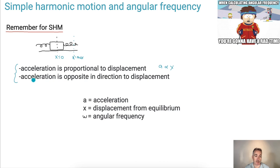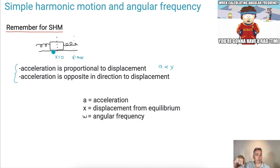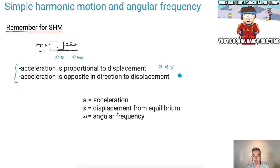The important thing is that the acceleration is also opposite in direction to the displacement. So if you pull it to the right, the restoring force goes to the left. If you pull it to the left, the restoring force goes to the right. Remember, where the net force goes, that's where the acceleration is. Same with the pendulum. So we can say it's equal to some negative constant times x.